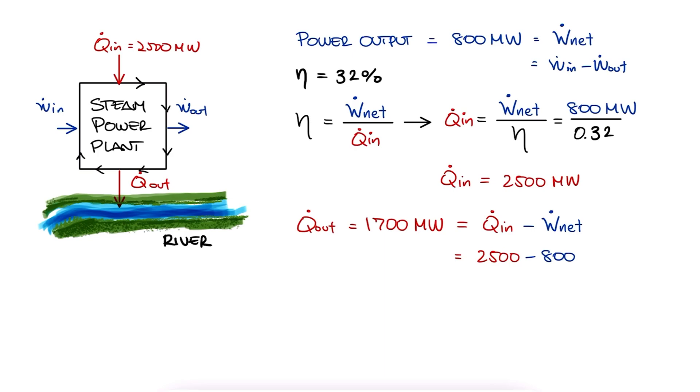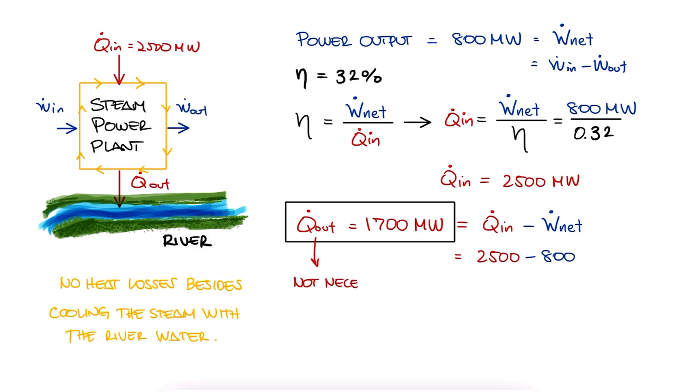The assumption we would have to make for stating that 1700 megawatts are going into the river only is that there are no other heat losses throughout the pipes and components of the plant. If these are negligible, then all 1700 megawatts are in fact dumped into the river, but if those losses to the components are not negligible, the only statement we can make is that 1700 megawatts are the heat lost.